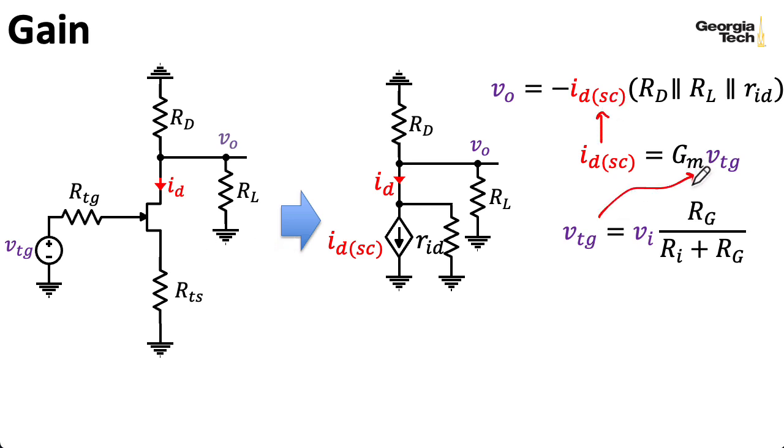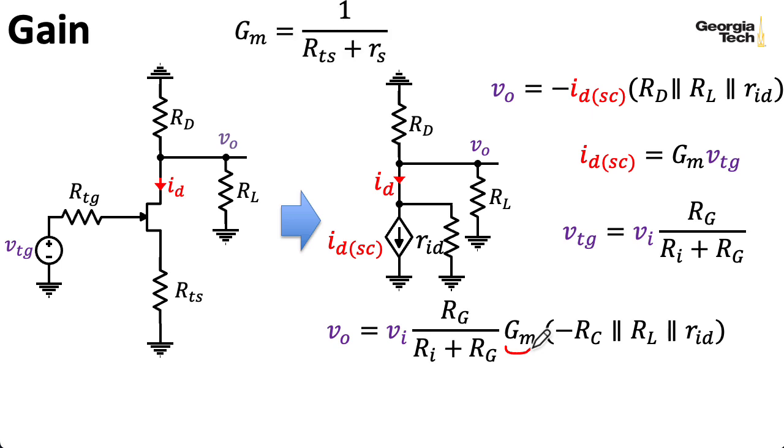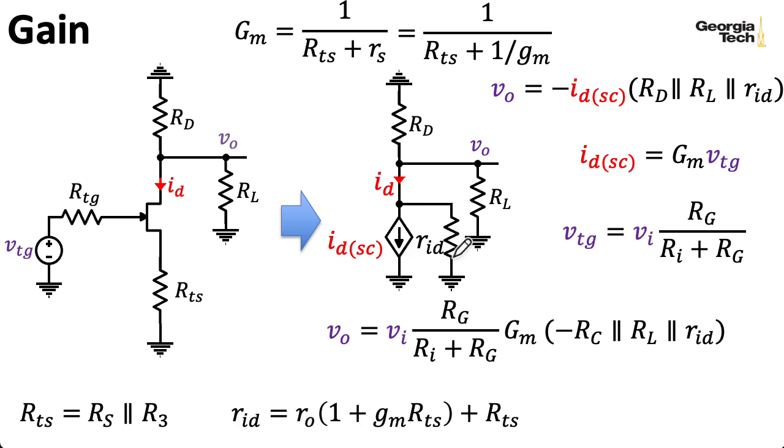VTG itself is equal to the result of this voltage divider. Now I can combine these three expressions to write the output in terms of the input like this. I'm going to take this constant here and call it AV in a later slide. Big GM is equal to RTS plus rs, our intrinsic source resistance, or I could rewrite this as 1 over RTS plus 1 over gm, our intrinsic transconductance. Remember the little rs and little gm are small signal parameters that depend on the drain current, whereas RTS in this case is RS in parallel with R3, which are fixed resistors that are part of our broader circuit. The Norton equivalent resistance RID is given by this expression, although if I want I could rewrite this using 1 over rs instead of gm.